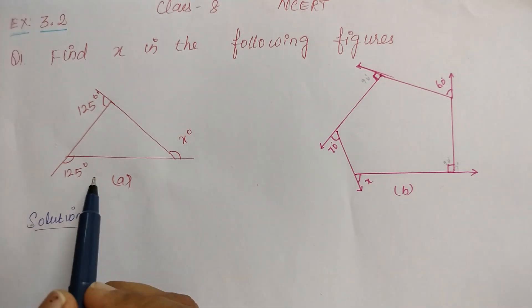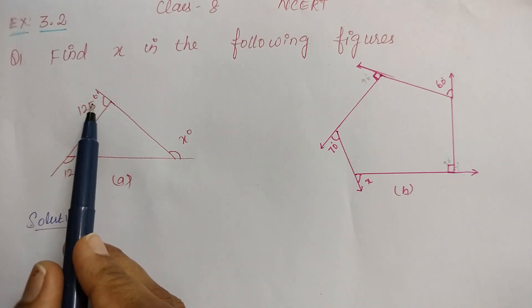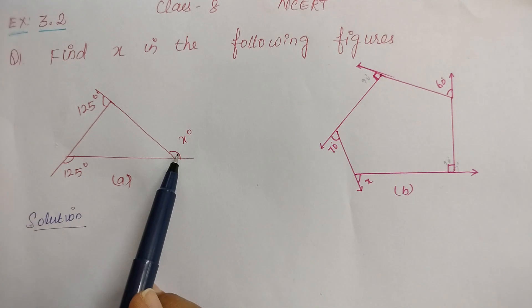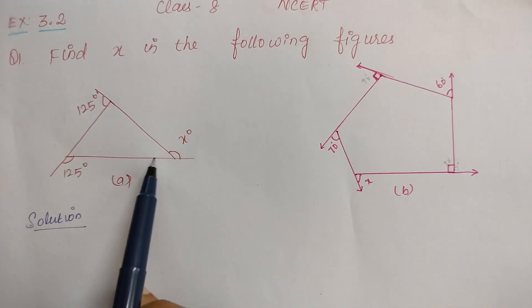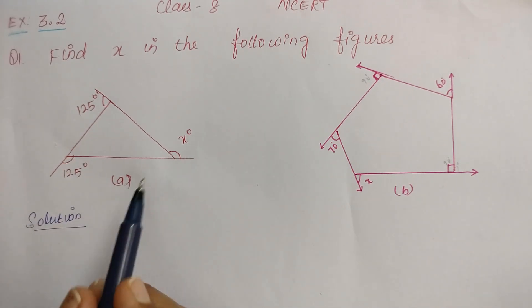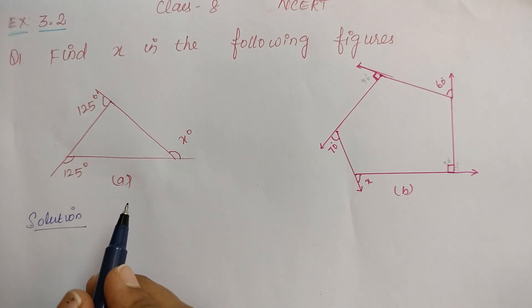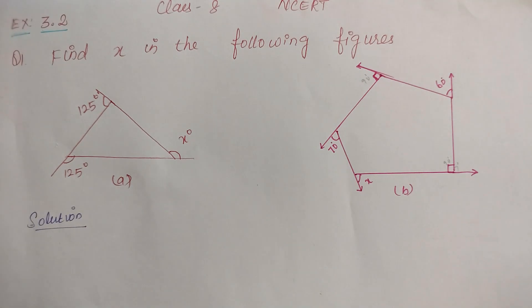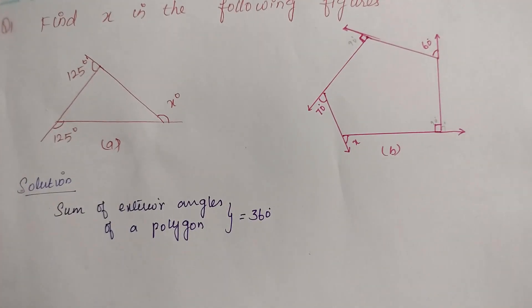In the first figure, this angle is 125 and this angle is 125, and we have to find angle x. All three of these angles are exterior angles. We know that the sum of exterior angles of a polygon is 360 degrees, so using this condition we can find angle x.